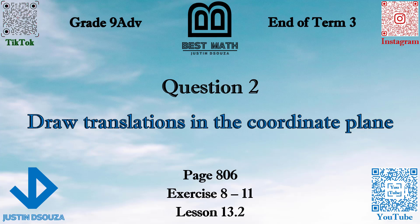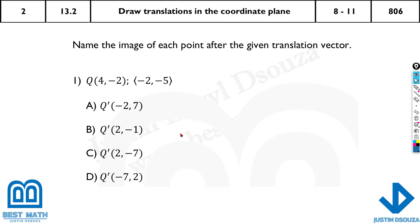In this video, we will learn about translations in the coordinate plane. Here we have been given the point Q, that is 4, -2, and the translation vector. It will be in the diamond brackets. You can see these pointy brackets, they are called diamond brackets, and that is the translation vector.